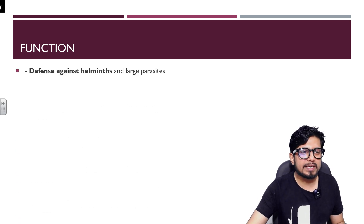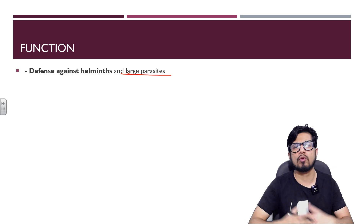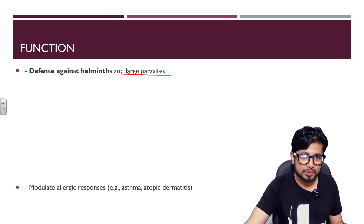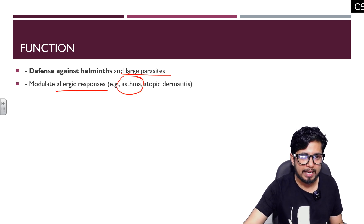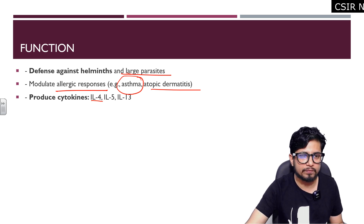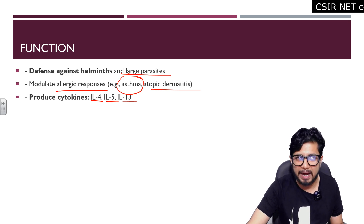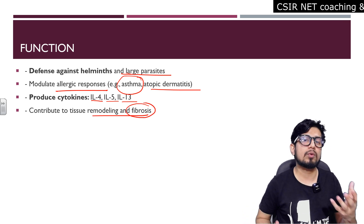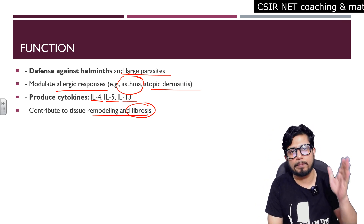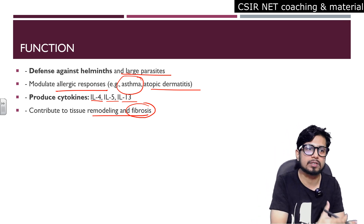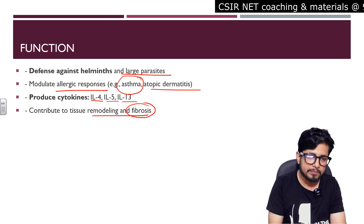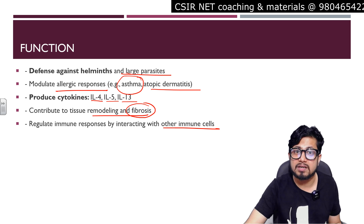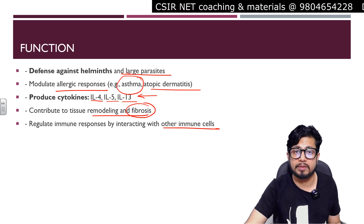Regarding function: eosinophils provide defense against helminths and large parasites whose size is much bigger than the immune cells. They modulate allergic responses and are involved in asthma and atopic dermatitis. They produce cytokines interleukin-4, interleukin-5, and interleukin-13. They contribute to tissue remodeling and can cause fibrosis. Eosinophil's function is not limited to helminths — they can also modulate allergic reactions, tissue remodeling, and fibrosis, and they can regulate immune responses by interacting with other immune cells.